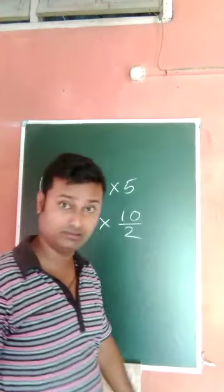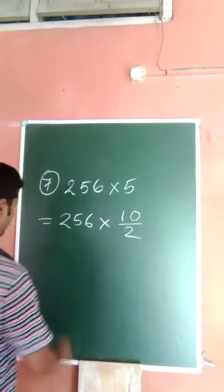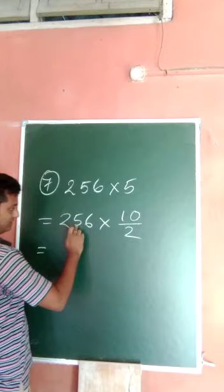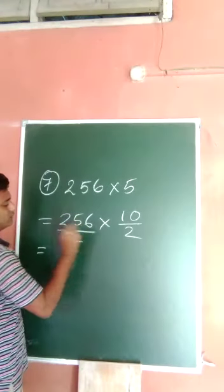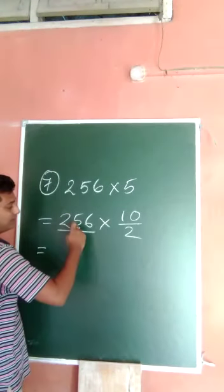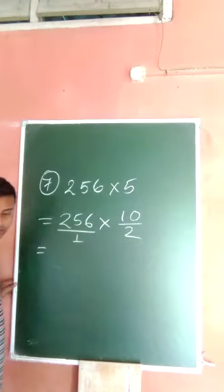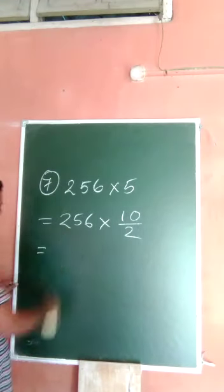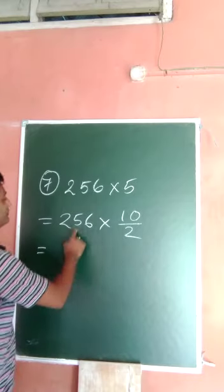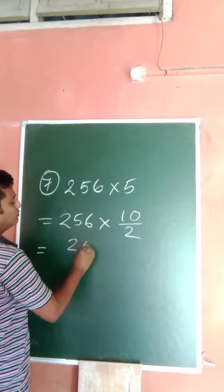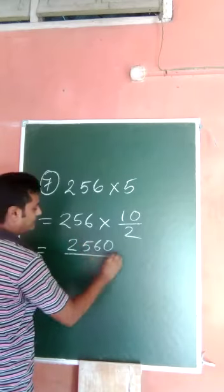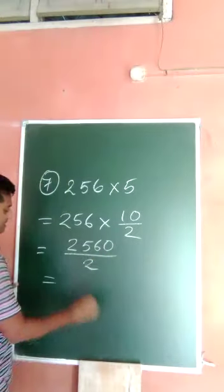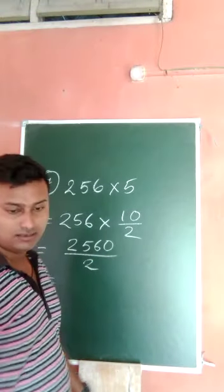10 by 2 is equal to 5. So now this one, actually there is no similar, there is one here. So you have to multiply numerator into numerator and denominator into denominator. No need to write one here, but I am. So in this one, 256 into 10, it becomes 2560 divided by 2.